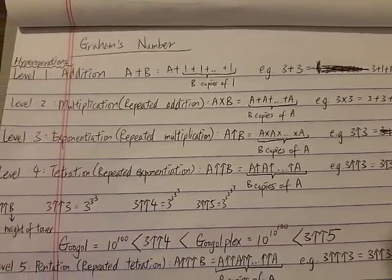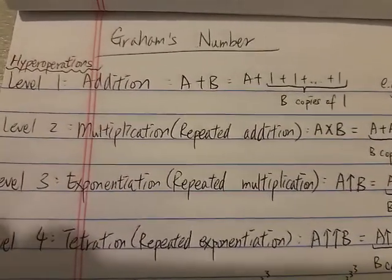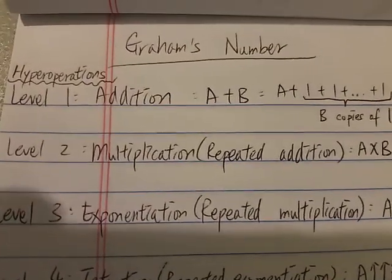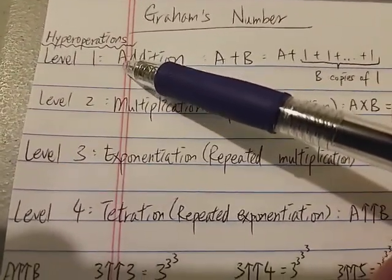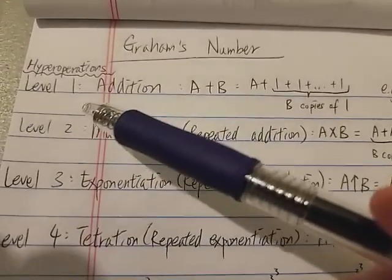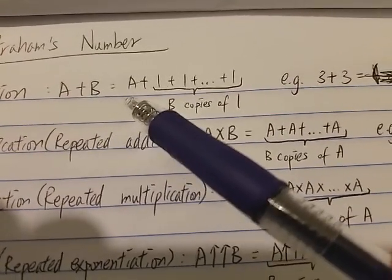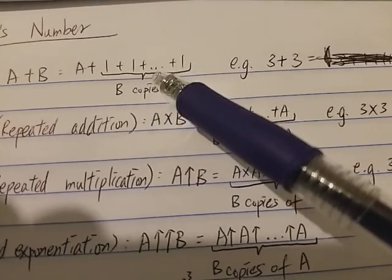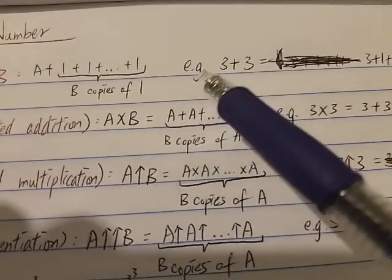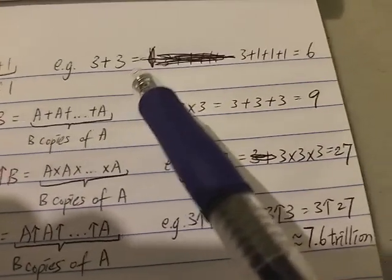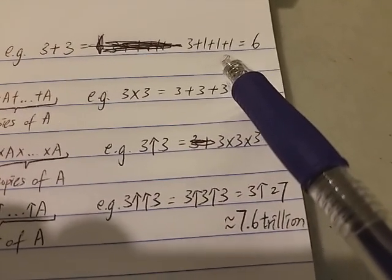So let's get started. Before we can discuss how big Graham's number is, we have to first look at something in mathematics called hyperoperations. In hyperoperations, we have several levels of operations. Level 1 is addition. So A plus B just means A plus 1 plus 1 plus 1... with B copies of 1. For example, 3 plus 3 means 3 plus 1 plus 1 plus 1, which is 6.